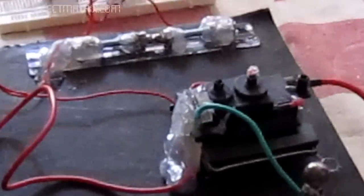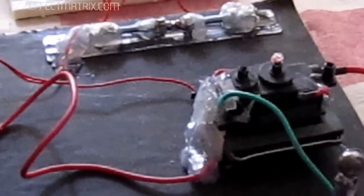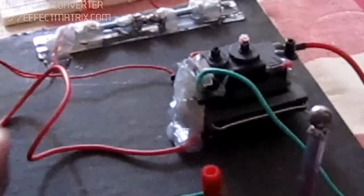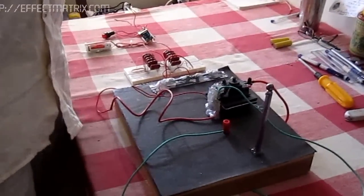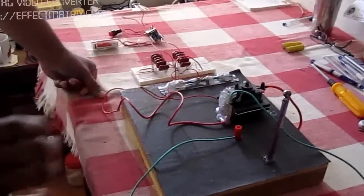This LOPT is a line output transformer or flyback transformer of a TV which I am using as a Tesla coil to demonstrate the directional strike and give a targeted directional strike on enemy vehicles.